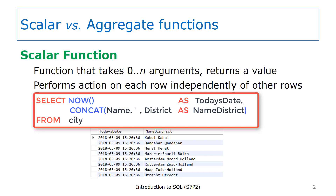On this slide, you see an example of two scalar functions. The first function is the NOW function. That function does not take any arguments and it returns the date and time. The second function is the CONCAT function. With CONCAT, you can specify one or more arguments. Each of the arguments for CONCAT is concatenated together to produce the result. In this example, there are three arguments for the CONCAT function: the name column, which is the city name, a single blank, and the district. You can see the results in the result grid. You see that the two functions are applied to each row in the grid. Each row has a value in the today's date column, which is the result of the NOW function. Each row also has a value in the name district column, which is the result of the CONCAT function.